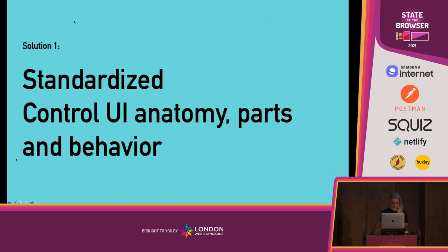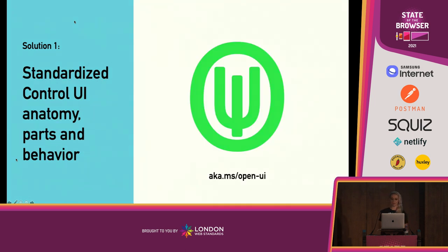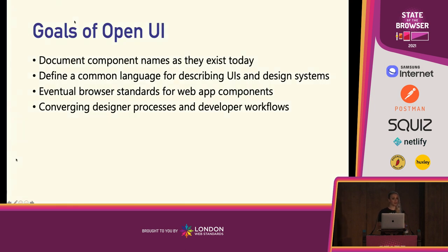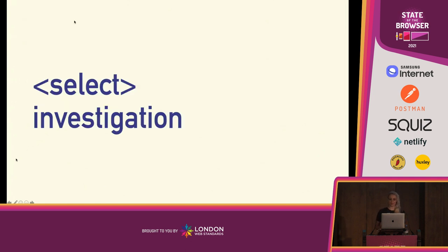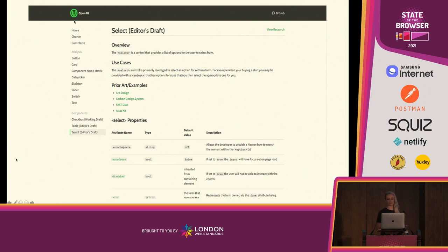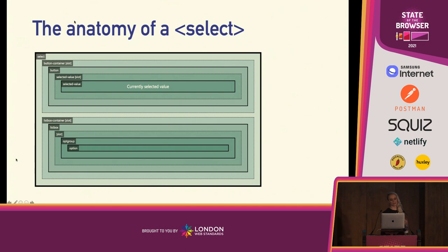The Open UI is focused on researching and documenting design systems and frameworks out there today. They're identifying patterns in naming and use cases, and then using those patterns to establish pathways for standards and eventually browsers. Because select was the biggest pain point for developers, it was the first thing that Open UI chose to research. There's an editor's draft proposal for select on the Open UI website, with details, use cases, and references to some of the frameworks studied. When I talk about standardizing control anatomy, I'll use select as an example of what that could look like.